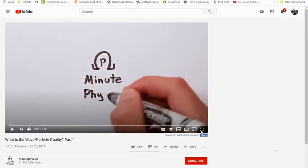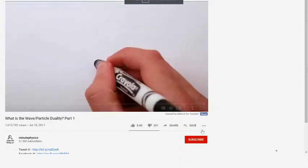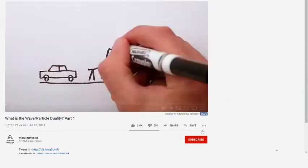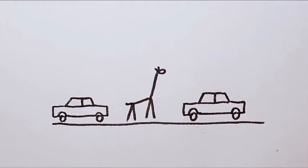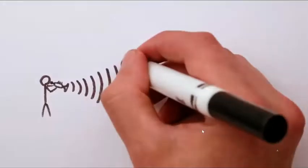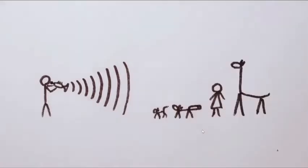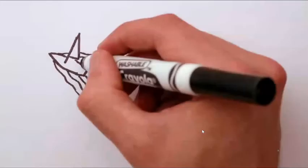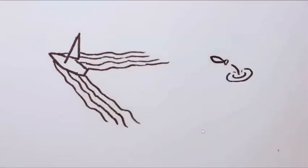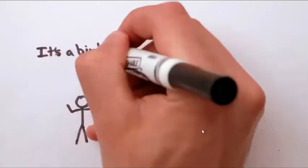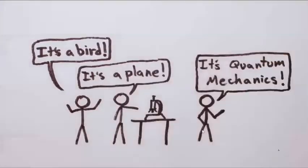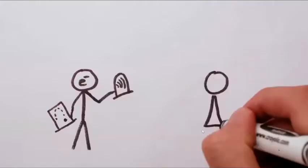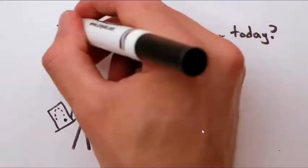We see particle-like behavior every day. Drop a ball on the ground and it follows a single trajectory. Leave your giraffe parked on the street and when you come back, it's still there — just one giraffe. And we see wave behavior too: toot your horn and waves spread out through the air, carrying sound to the ears of anyone around. When it comes to the physics of the very small, we see a wave-particle duality. Sometimes electrons and protons behave like particles, sometimes like waves.